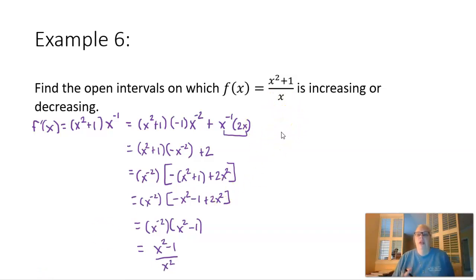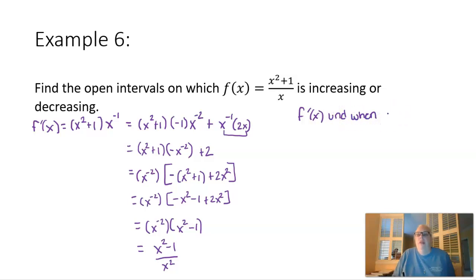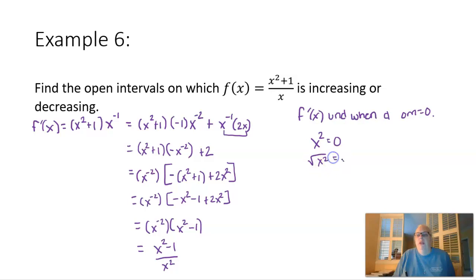We're looking for where f prime equals zero and where f prime is undefined. F prime is undefined when the denominator equals zero: x squared equals zero, so x equals zero — that's a critical number. F prime equals zero when the numerator equals zero: x squared minus 1 equals zero, so x squared equals 1, and taking square roots gives x equals plus or minus 1. These are also critical numbers.